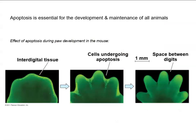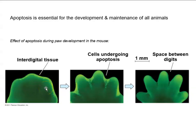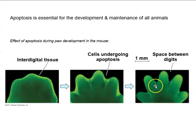Apoptosis is a very important part of the development and maintenance of all animals. An example is paw development in mice: you can see there is tissue between the digits — between the tiny fingers of the mouse — and then those cells undergo apoptosis, so spaces are developed between the actual digits. This process is really, really important.